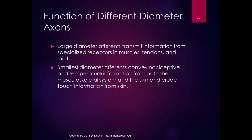The function of different diameter axons: large diameter afferents transmit information from specialized receptors in the muscles, tendons, and joints. Those are Roman numerals 1 through 4. The 1As and 2s are in the muscle spindle, the 1Bs are in the Golgi tendon organs, and the 2s, 3s, and 4s are in the joint capsules — all giving us information from our muscles, tendons, and joints.